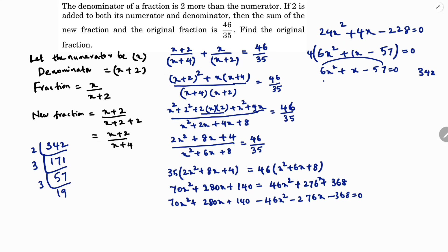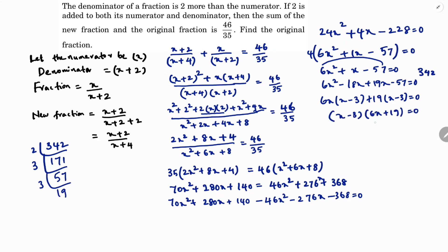So 6x² minus 18x + 19x minus 57 equals 0. Taking 6x common from the first two terms: 6x(x minus 3) plus 19(x minus 3) equals 0. Therefore (x minus 3)(6x + 19) equals 0, giving x = 3 or x = minus 19/6. The negative value is ignored.